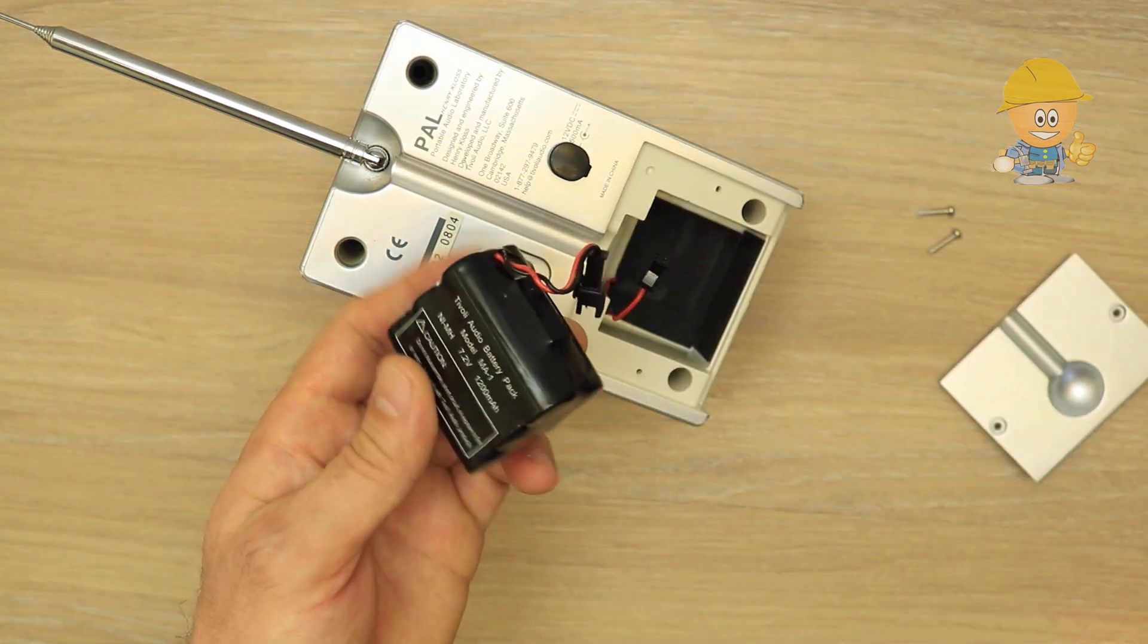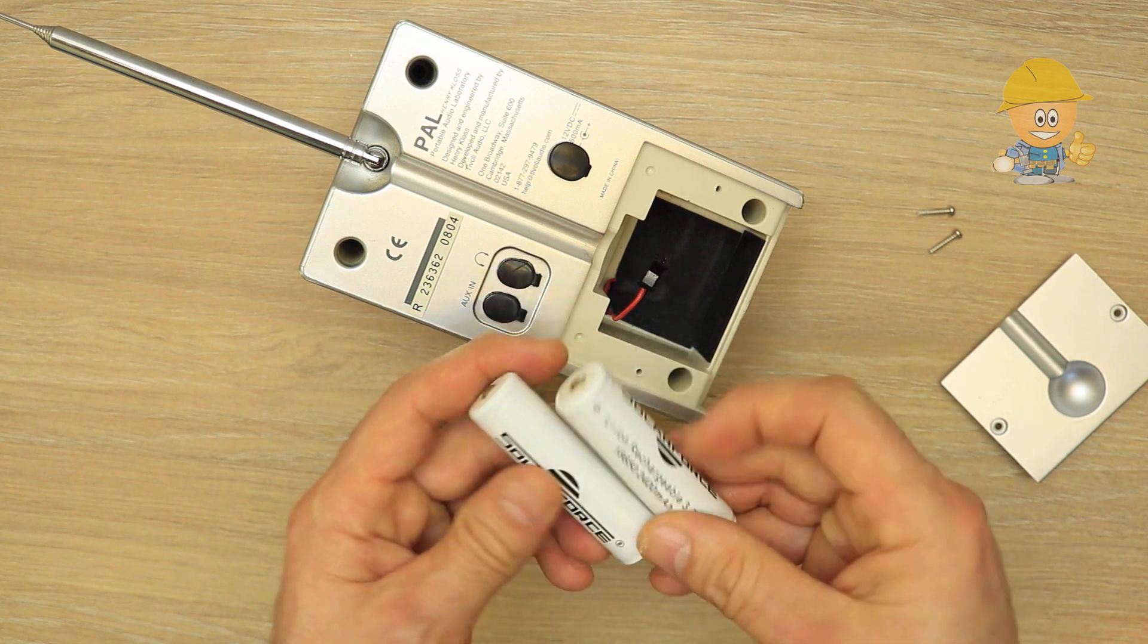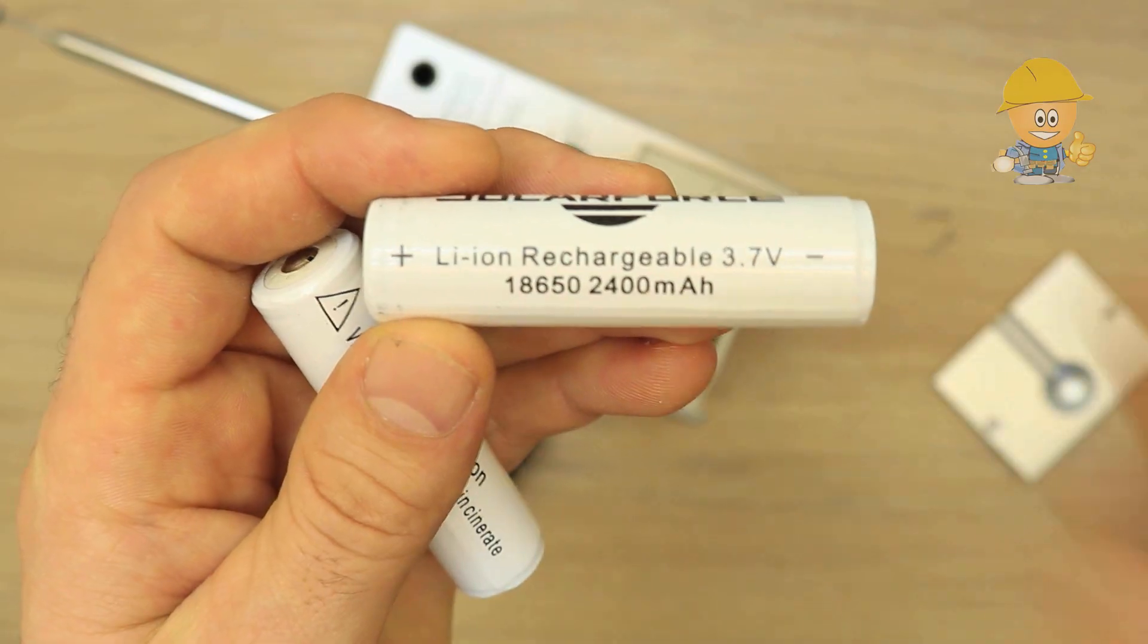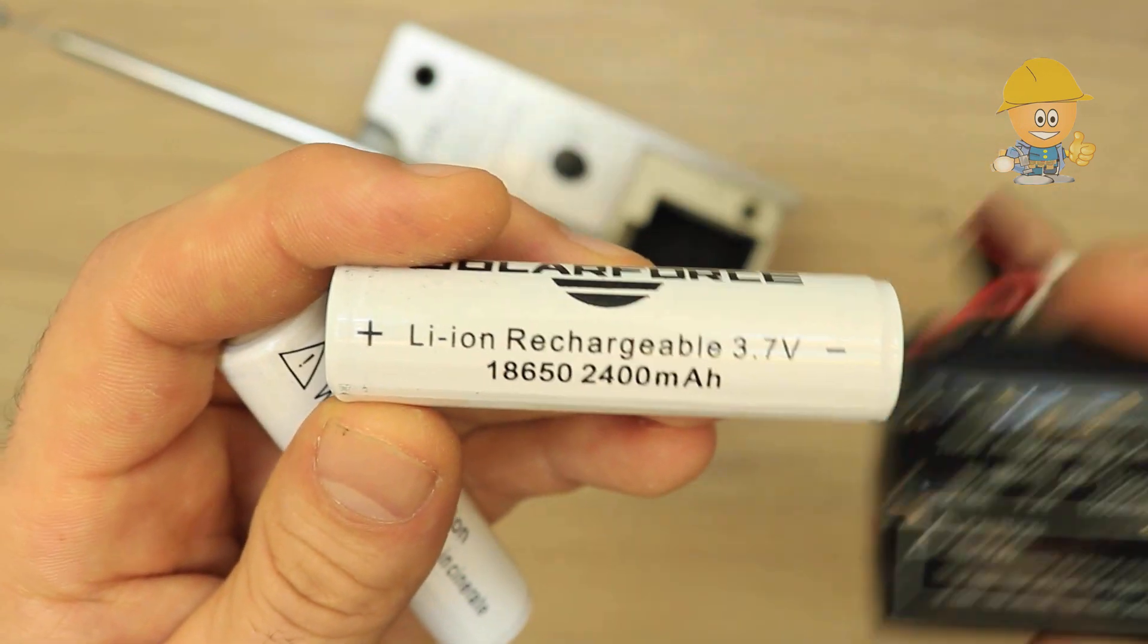So I decided to replace them with two lithium batteries of 3.7 volts and 2.4 ampere hours, which I will connect in series to get 7.4 volts.